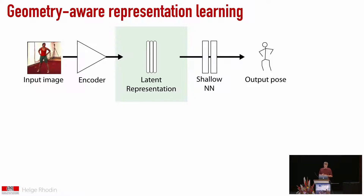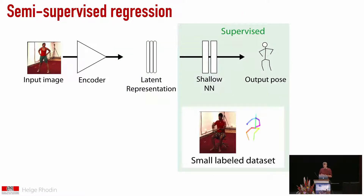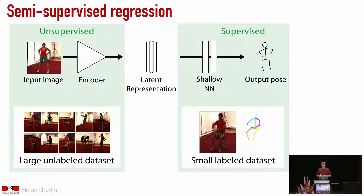To overcome this limitation, we propose a geometry-aware representation learning technique. The key part is that we split the deep neural network into two parts. We put this latent representation in the center, and if the latent representation is powerful enough, the step from latent representation to 3D pose should actually be easy. If it's easy, we can use a simple network with few parameters, train it on a small dataset, and still get high accuracy. The problem then is how can we learn a powerful representation which somehow encodes human pose, shape, and appearance, without using a lot of labels.